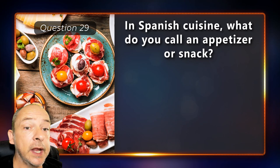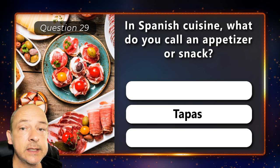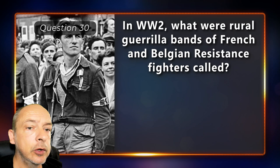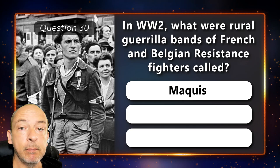In Spanish cuisine, what do you call an appetizer or snack — an aperitivo, tapas or order? It's called tapas. In World War II, what were rural guerrilla bands of French and Belgian resistance fighters called — Maquis, carbander or Zapatista? They were called Maquis.